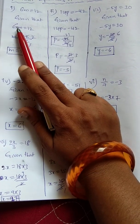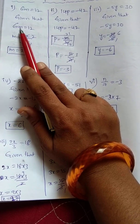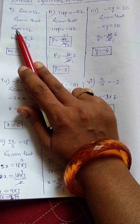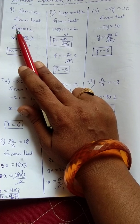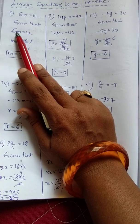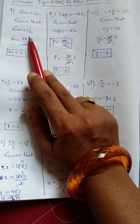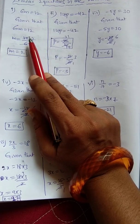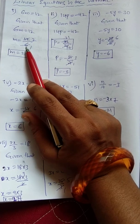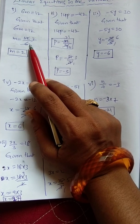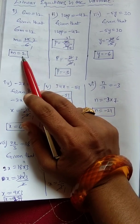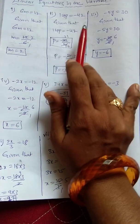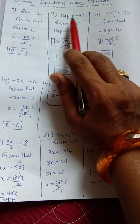So m equals — here, see, for 6 and m the operation is multiplication, then transpose of multiplication will give division. So 12 by 6: 6 ones are 6, 6 twos are 12, so m equals 2 will come after cancellation.